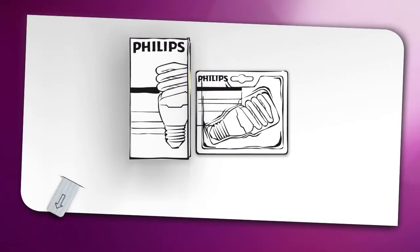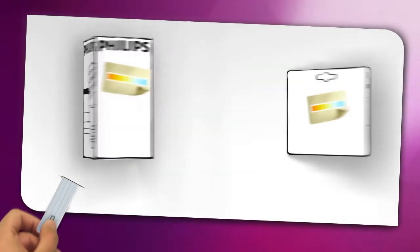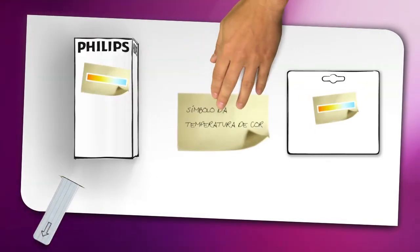You'll find the color temperature of a Philips bulb clearly marked on packaging, so choosing a bulb with the right color temperature can happen in just a wink of an eye.